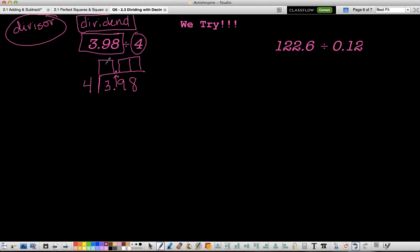So 4 goes into 3, 0 times. 0 times 4 is 0, and I get 3, and I bring down the 9. Now I know that 4 goes into 39, 9 times. 9 times 4 is 36, and then I subtract, and I get 3. So I bring down the 8. 4 goes into 38, again, 9 times. I subtract 36, and I get 2.